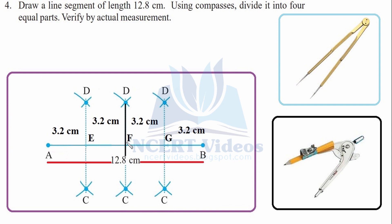Now divide AF and FB separately. Place the needle at F, then at A to get two intersection points. Similarly, place the needle at B with the same radius, mark two arcs, then put the needle at F to get the intersection points. Connect these points — D and C on each part — to complete the four equal divisions.